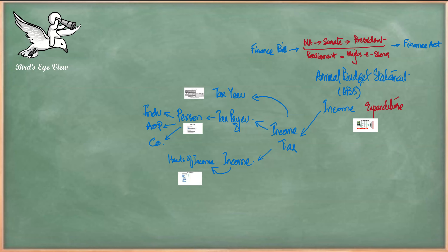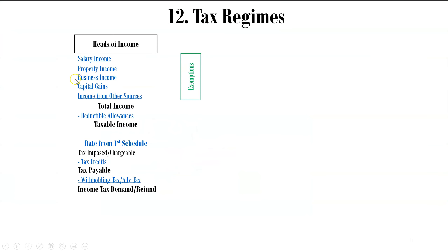Once you have determined the person whose income and tax you need to calculate, the next main step is calculating the heads of income as defined by tax law. There are five heads of income in Pakistan: salary, property, business, capital gains, and other sources. Your total income is the sum of these. Exemptions are those amounts which come to your pocket but are not included in the tax calculation. Total income minus deductible allowances gives you taxable income.